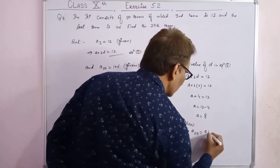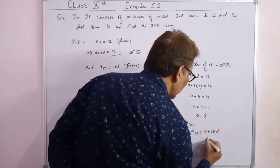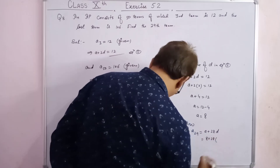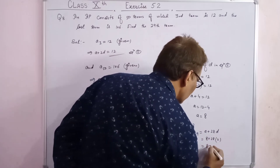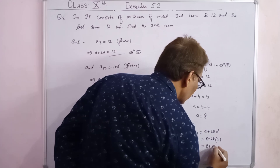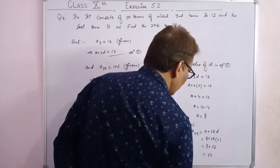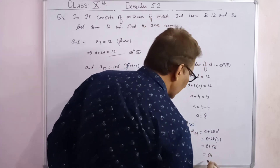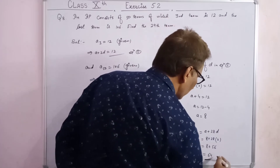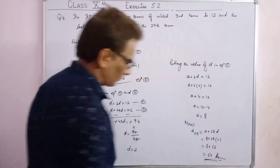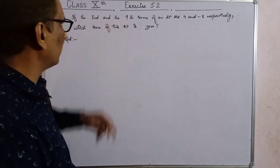So a equals 8 and d equals 2. Now a29 equals a plus 28d equals 8 plus 28 into 2 equals 8 plus 56 equals 64. The 29th term is 64.